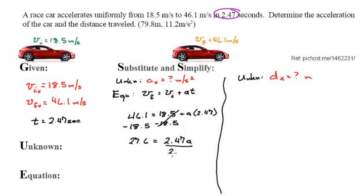In order to get acceleration all by itself, I'm going to divide by 2.47 to cancel. Whatever I do to the right, I need to do to the left, and so I get acceleration in the x equals 11.17408. If I take a look, 3 sig figs, 3 sig figs, 3 sig figs, the answer is going to have 3 sig figs, 11.2 meters per second squared.